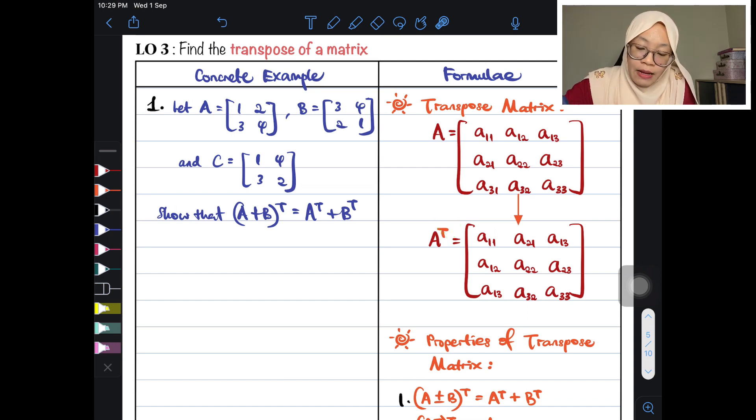Okay, so dalam ni guys, this is what we call as element. In a 3x3 matrix, there are 9 elements. This is the first row here. So the first row here will be becoming the first column when it is transposed. That is the meaning of transpose.